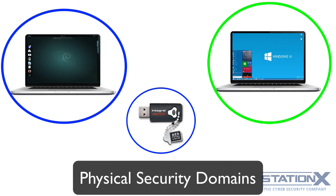You could use an internet cafe to send an anonymous message, or boot that machine with your own operating system and configurations. You could use an internet connection you don't own for privacy. You could have a separate router or separate network equipment for a particular type of privacy activity. You could also have separate network cards, Wi-Fi cards, or Ethernet adapters. These are all examples of physical security domain separations.